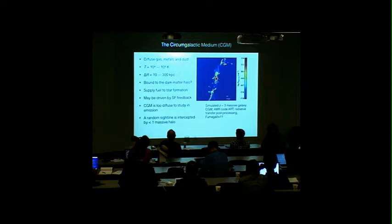Here I'm showing the results of Formigali et al. 2011. It's a simulated redshift 3 massive galaxy. They used an adaptive mesh refinement code called ART, and then they post-processed this galaxy with radiative transfer. The code included extragalactic UV background and local sources of UV radiation.